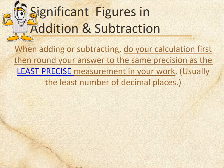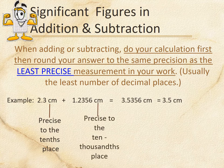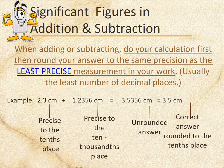For adding and subtracting, you always round to the same precision as your least precise measurement — meaning the fewest decimal places. For example, 2.3 has one decimal place and 1.2356 has four decimal places, so your answer can only have one decimal place. The answer would be 3.5 — we keep it at 5 because the digit to the right is less than five, so it doesn't round up.